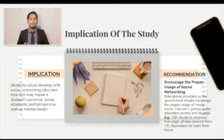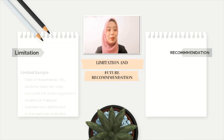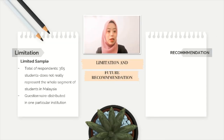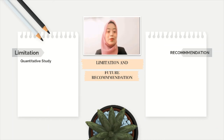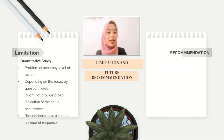Let's go to the limitations and future recommendations. The first limitation is limited sample size. The total of 365 respondents does not really represent the whole segment of students in Malaysia, as the questionnaires were distributed among students in only one particular university, UITM Seremban 3. We suggest future researchers increase the number of respondents to improve accuracy, and include more students from other universities such as UKM, UiTM, USM, and other public and private universities.